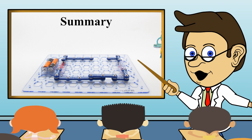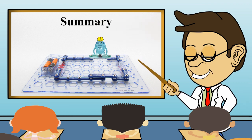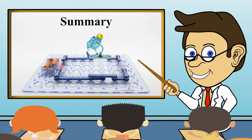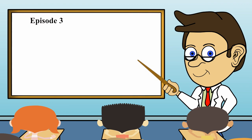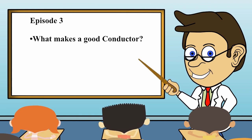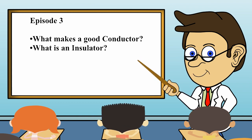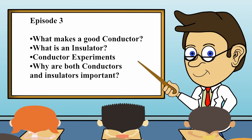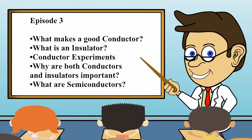In this episode, we have built our first electrical circuits. Tune in to our next episode where we will use that circuit for some fun experiments. In episode three, we will explore the following: What makes a good conductor? What is an insulator? Conductor experiments. Why are both conductors and insulators important? What are semiconductors?